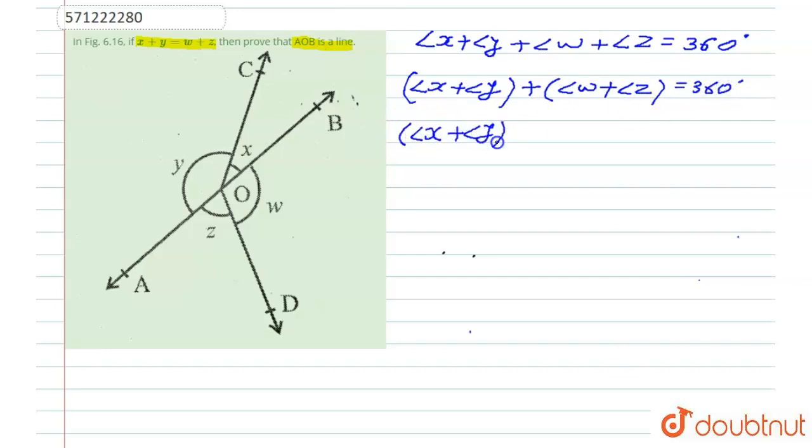Again, angle x plus angle y, and we know that x plus y is equal to w plus z. So in place of w plus z, we can write angle x plus angle y is equal to 360 degrees. So this is twice of angle x plus angle y is equal to 360 degrees.